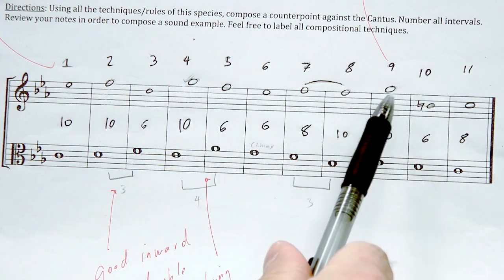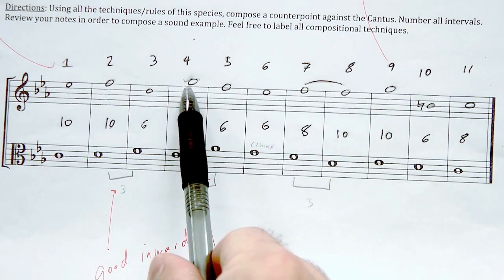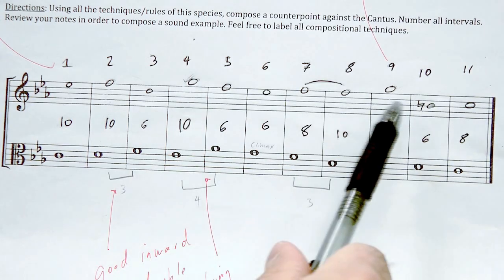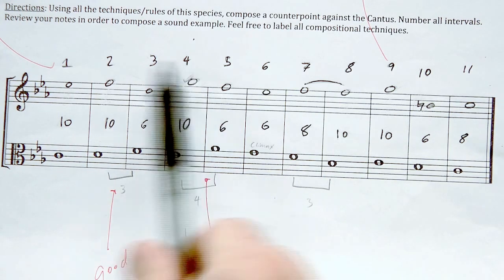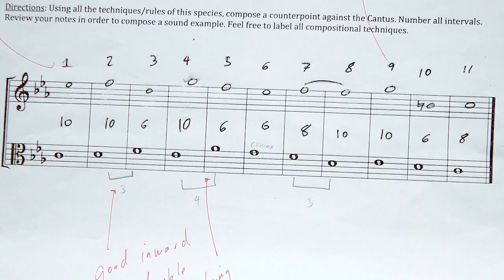And he does reserve measures 4 and 9 for the climactic moments, where he hits his G naturals respectively, which is scale degree 5 in the key of C minor. Okay? Let's take a look at the counterpoint that he adds above the cantus.